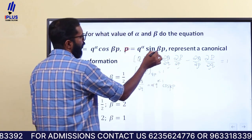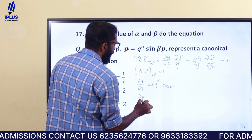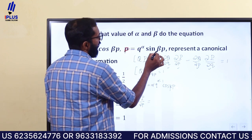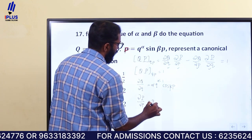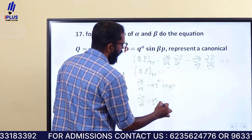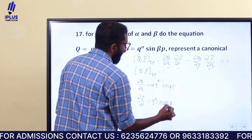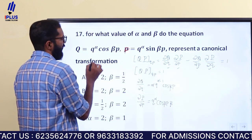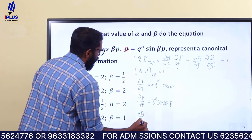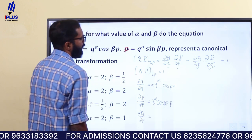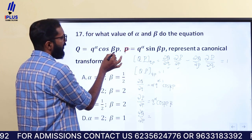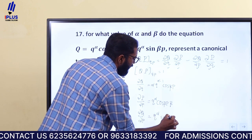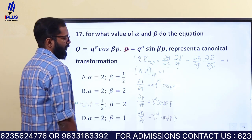dou P divided by dou p: P is equal to q raised to alpha sin(beta p), so the derivative is q raised to alpha times cos(beta p) into beta. And dou Q divided by dou p equals q raised to alpha times minus sin(beta p) into beta.